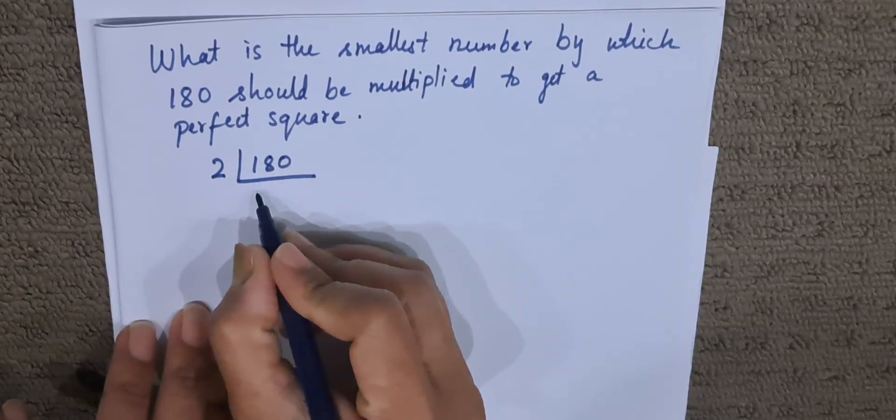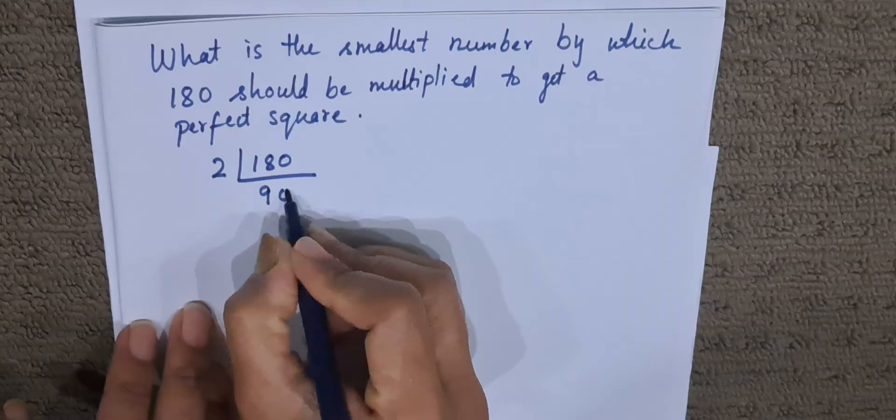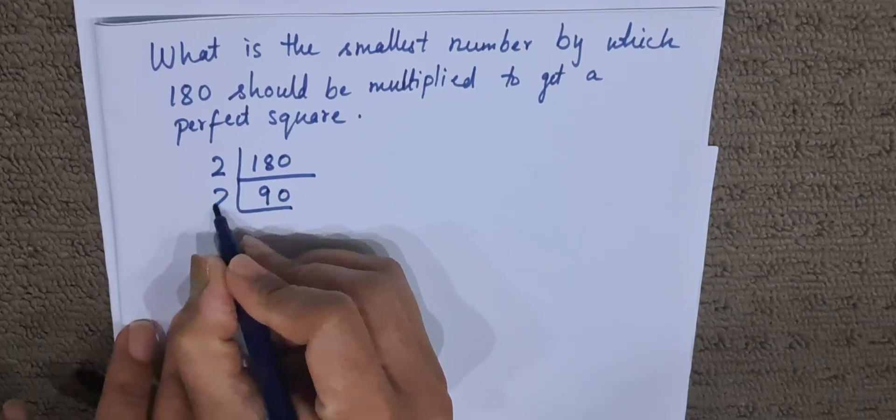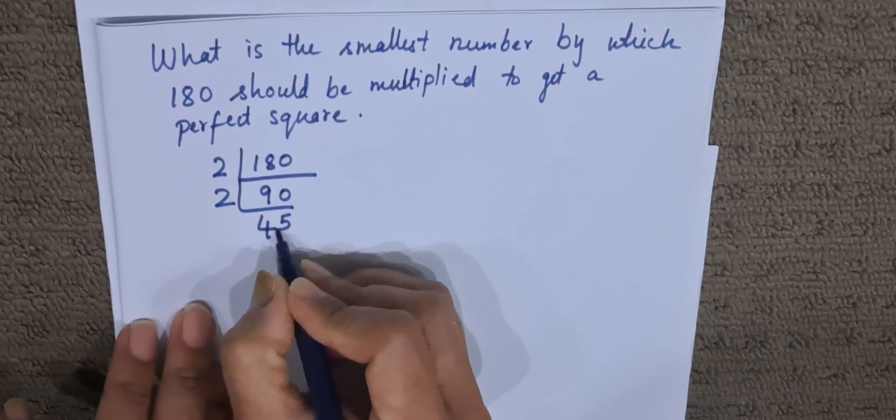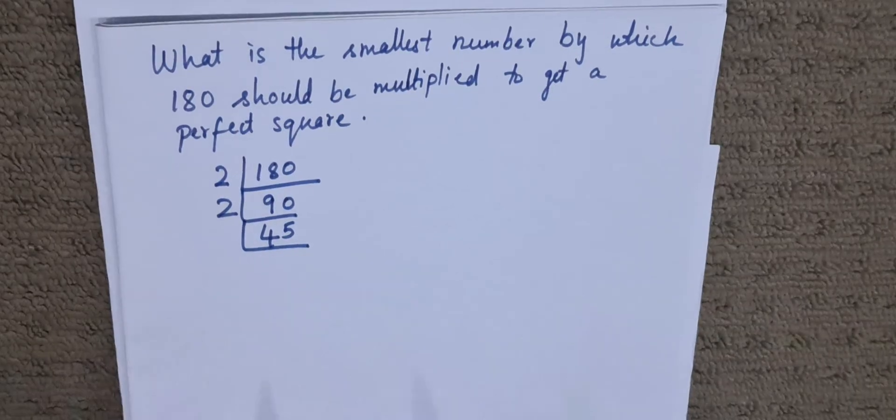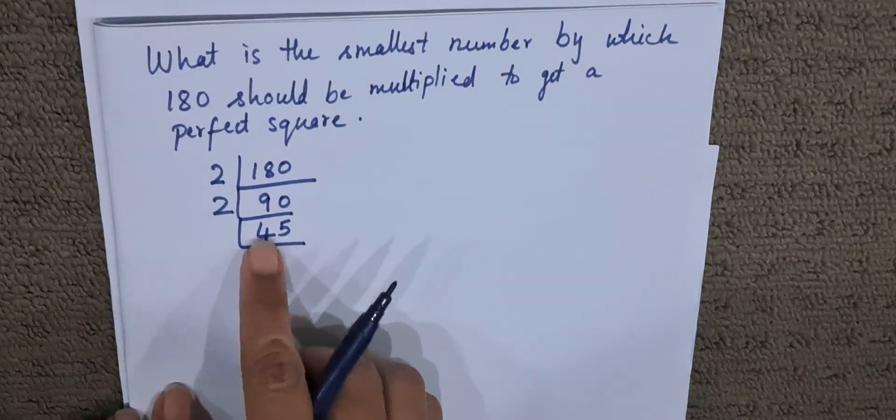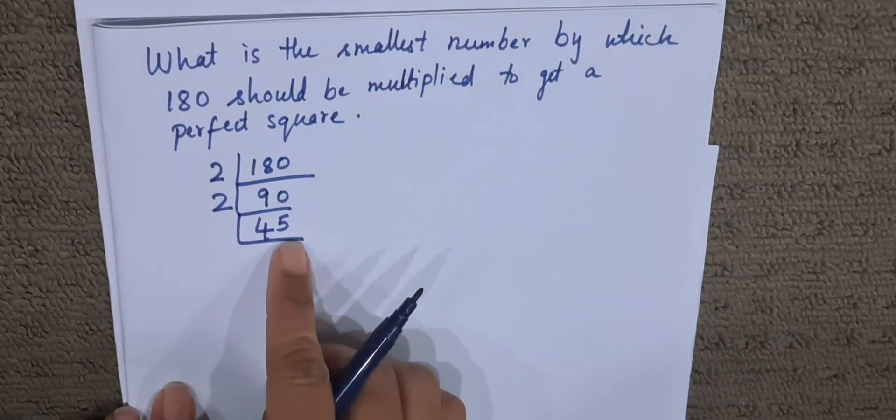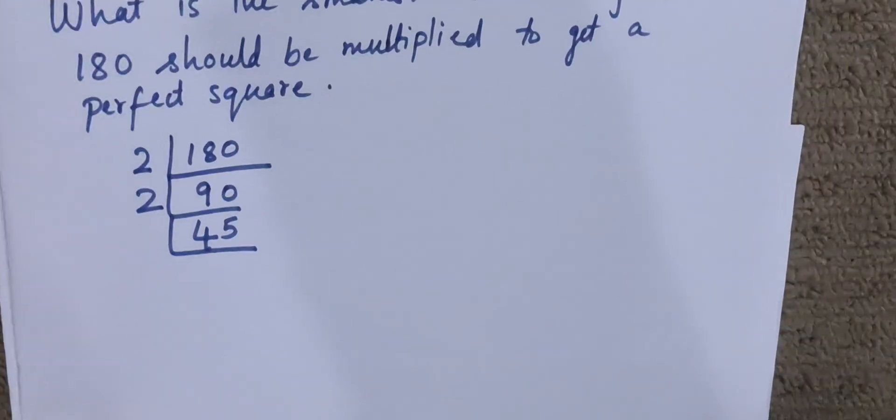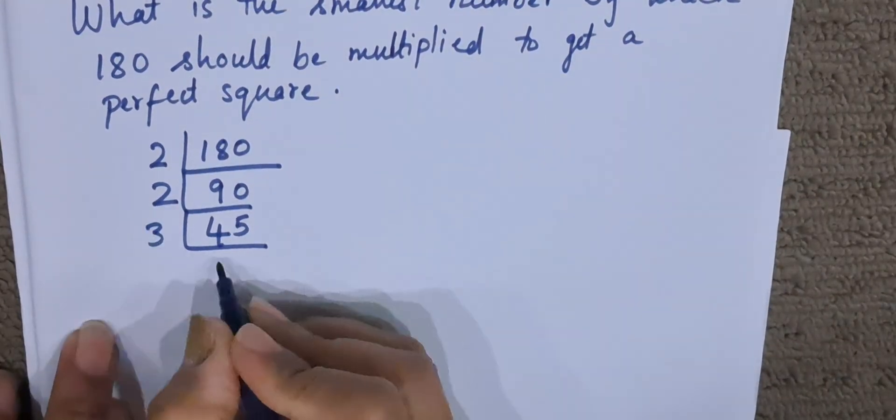2 divides 180. 2 nines are 18, and 0. Again this is divisible by 2. 2 forty-fives are 90. Now 45: 4 plus 5 is 9, so 9 is divisible by 3, so 45 is also divisible by 3. 3 ones are 3, 1 is the remainder, 3 fives are 15.